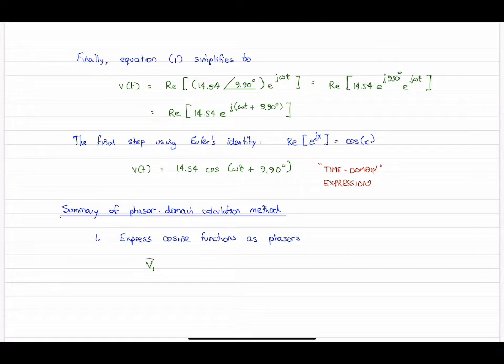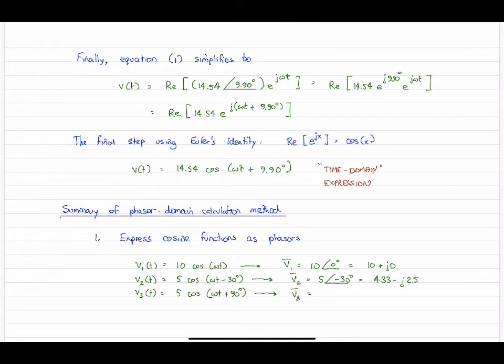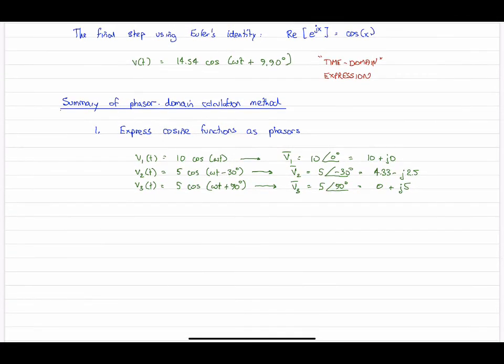Just to summarize: V1 bar, starting with V1(t) in the time domain, there it is again. Its phasor notation is 10 at 0 degrees. Likewise, V2, and its phasor notation is V2 bar, 5 at minus 30 degrees, which we evaluated to be 4.33 minus j2.5. V3(t), the last one, 5, its phasor notation is 5 at 90 degrees, 0 plus j5.